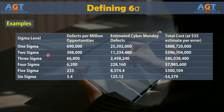At Four Sigma level, estimated Cyber Monday defects would be 228,160 and with an average cost of $35 per error, the total cost of errors would be $7,985,600.